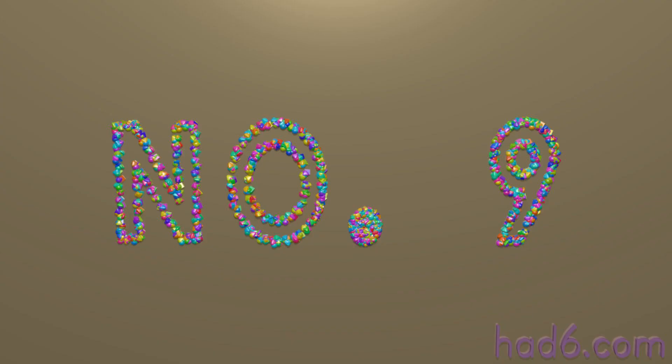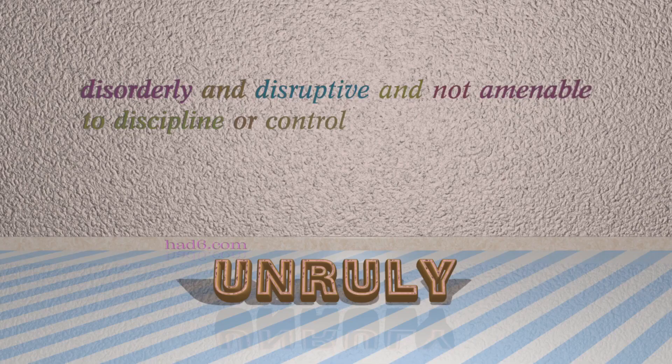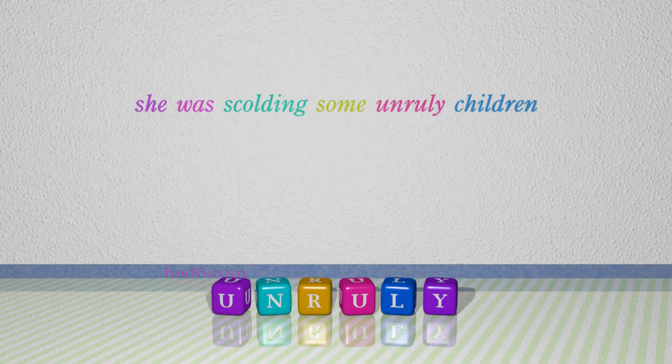Number 9: Unruly. Which means disorderly and disruptive and not amenable to discipline or control. For example: she was scolding some unruly children.